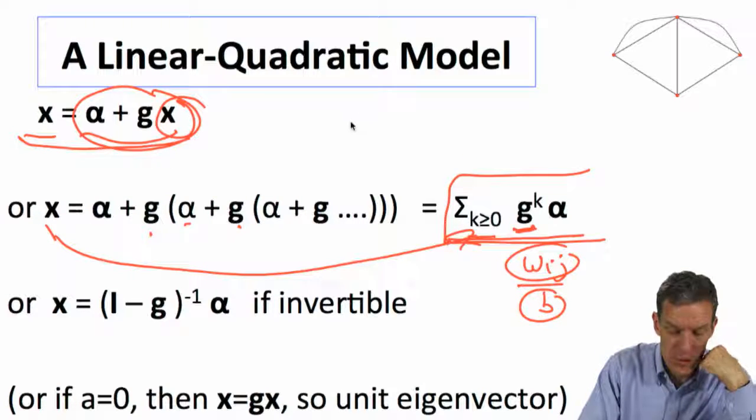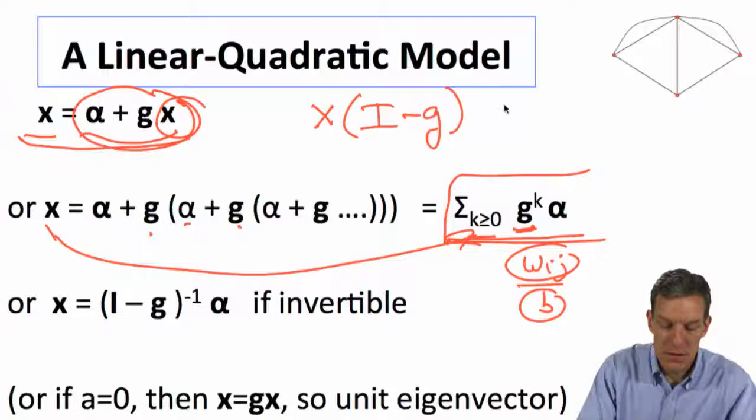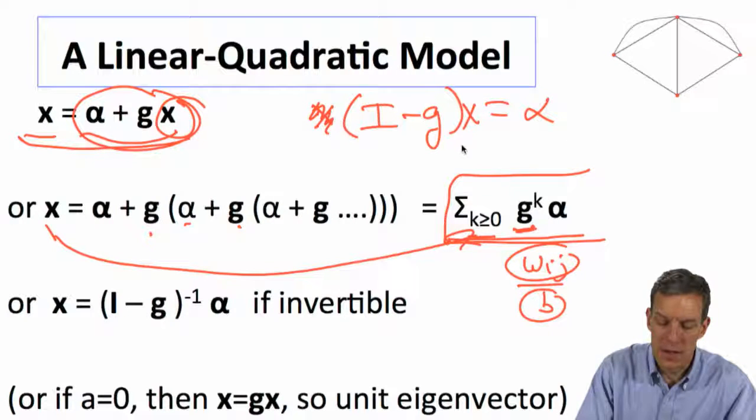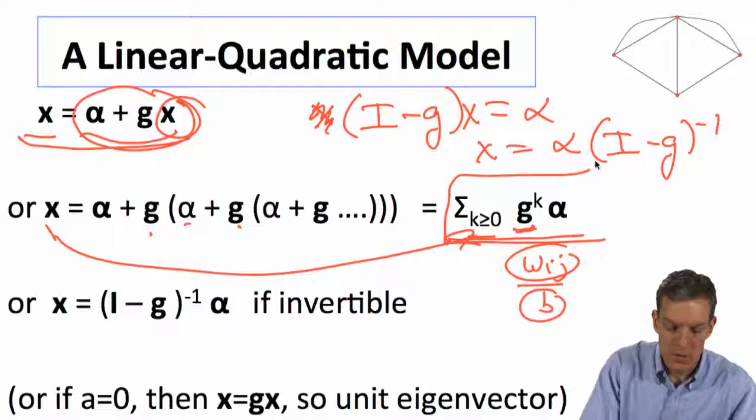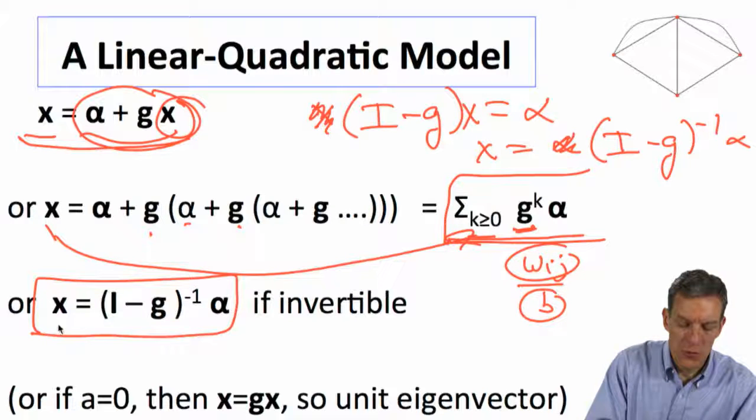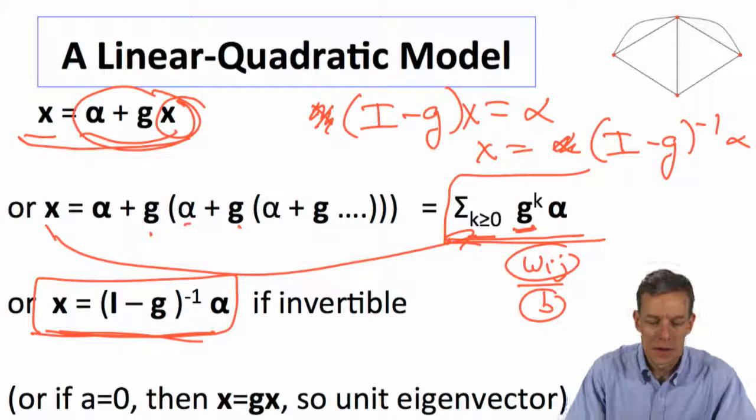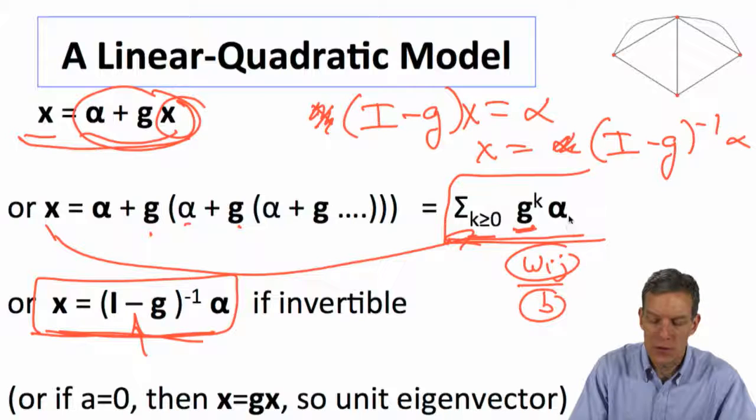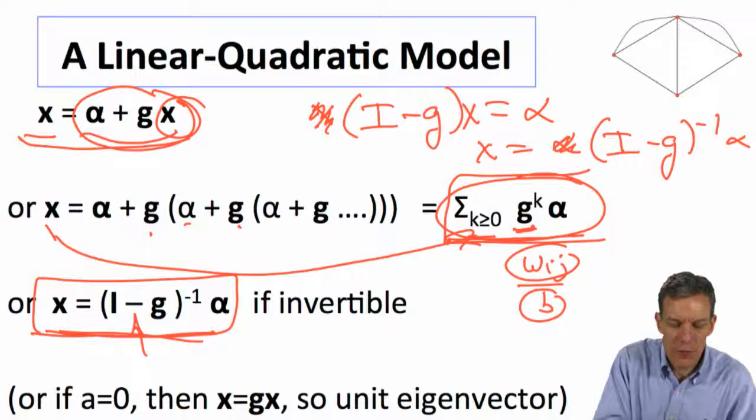Now another way to solve this is just to write this as x times i minus g is equal to alpha, or sorry, i minus g times x is equal to alpha. And then that means that x is equal to alpha times i minus g inverse, down here, so I've got this reversed, the alpha should be here. So you could have x is equal to i minus g inverse times alpha if this thing's invertible, and this thing being invertible is the same condition that you need for this thing to converge.